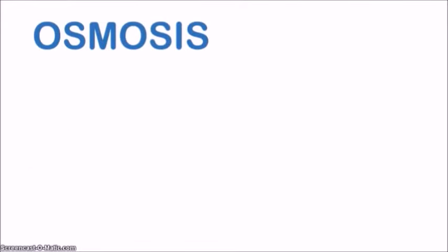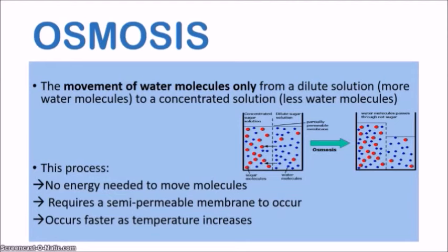Now let's look at osmosis. Osmosis is the movement of water molecules only, from a dilute solution — an area with more water molecules — to a concentrated solution — an area with fewer water molecules. Think of osmosis as a special type of diffusion that is only concerned with the movement of water molecules. As you can see in this diagram, we have a concentrated sugar solution on the left and a dilute sugar solution on the right. The water molecules are the blue circles, the sugar molecules are the red circles, and there is a semipermeable membrane in between.